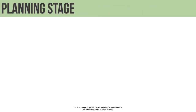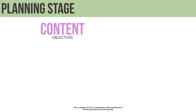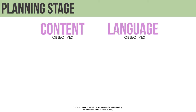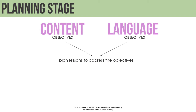This process begins at the planning stage. First, we should set clear content learning objectives and clear language learning objectives. Next, we should plan our lessons to address the objectives we have set. Recall that we focused on these issues in Module 4.